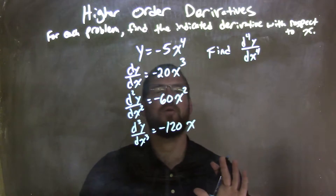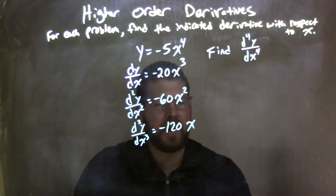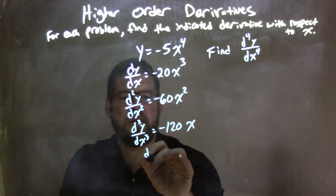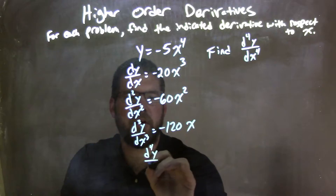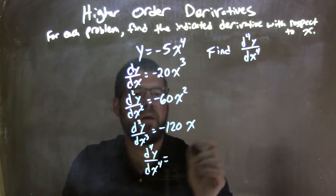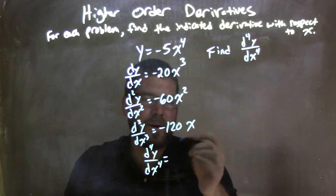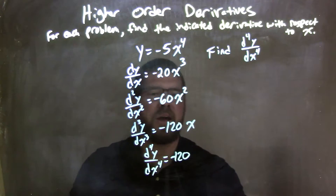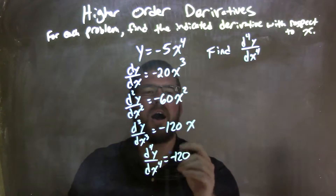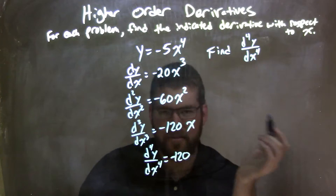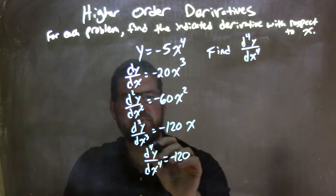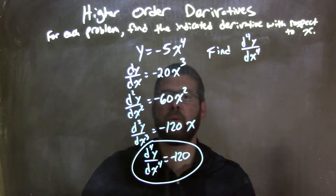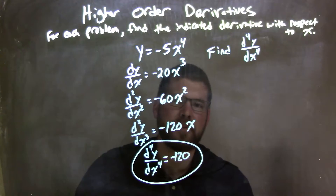We have to use the power rule exactly 4 times — not 3, not 5. So for the 4th derivative, d to the 4th power y over dx to the 4th: using the power rule, the 1 comes down and it's just negative 120. The x ends up being eliminated — it gives x to the 0 power, which is just 1. So our final answer is negative 120.